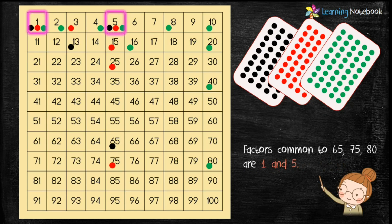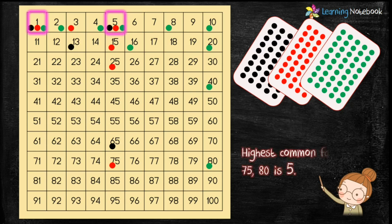Students, you can now see that there are numbers which have all three colored stickers on them — they are 1 and 5. Therefore, 1 and 5 are the common factors of 65, 75, and 80. The highest common factor is 5. So the HCF of 65, 75, and 80 is 5.